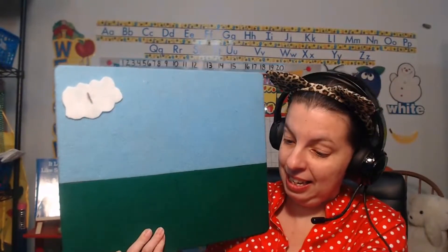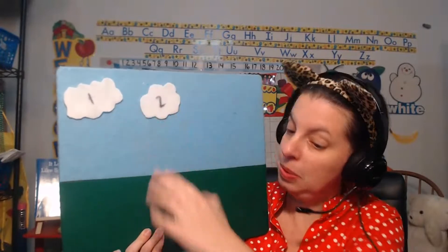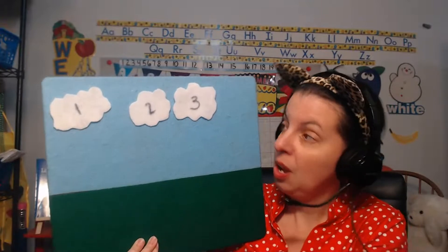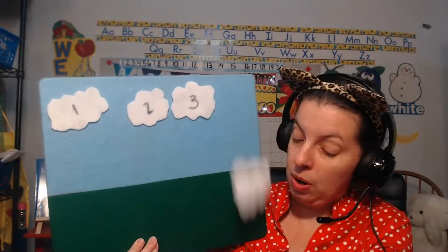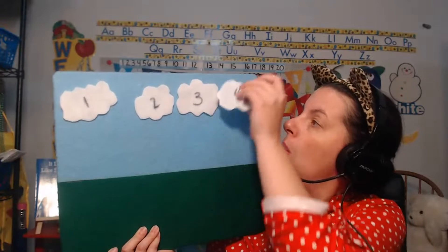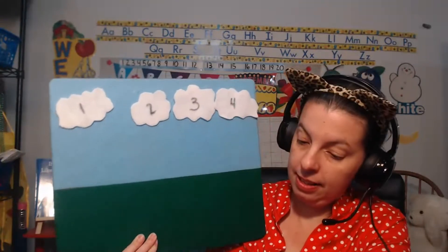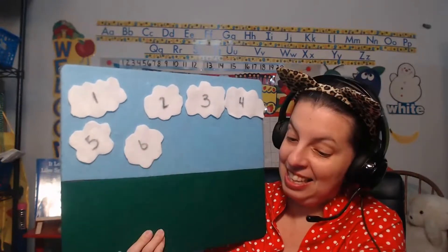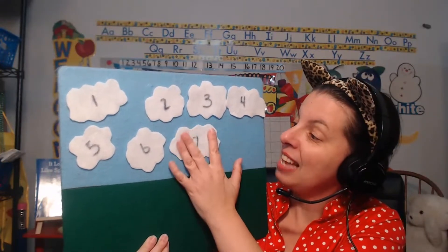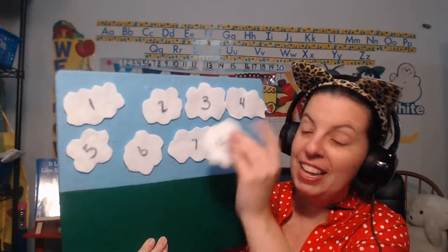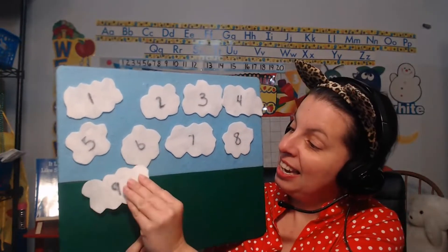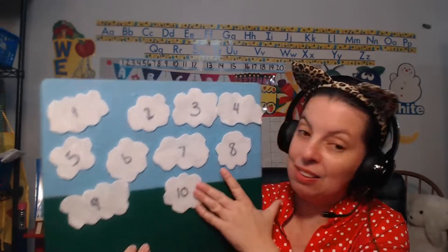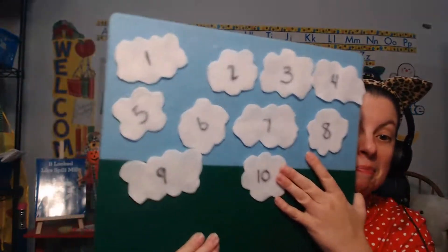One little, two little, three little clouds. Four little, five little, six little clouds. Seven little, eight little, nine little clouds. Ten little clouds, floating high.